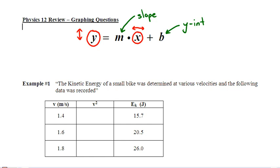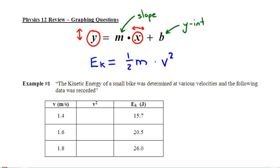Let me show how I'm always thinking about y = mx + b. The kinetic energy of a small bike was determined at various velocities and the following data was recorded. The physics behind that is kinetic energy equals one-half mv squared. I can see we're doing a graph with kinetic energy up and down, but it's not going to be v across because that would give a curved graph. Kinetic energy can be my up-and-down axis, equal to one-half the mass times velocity squared, plus zero.